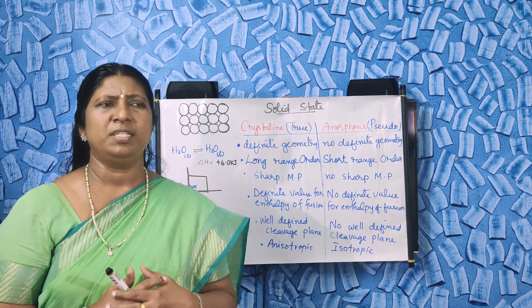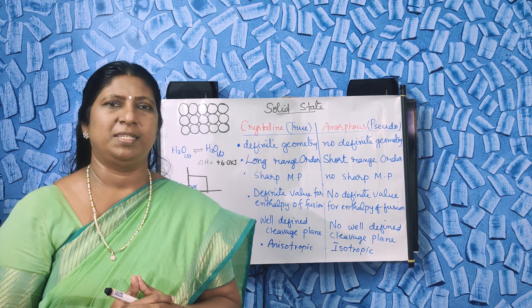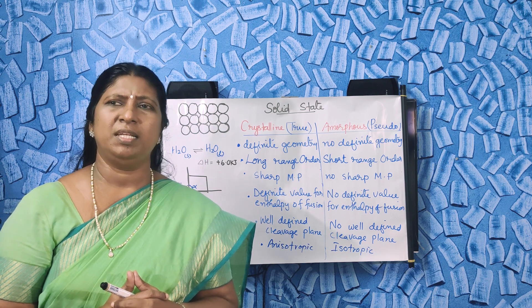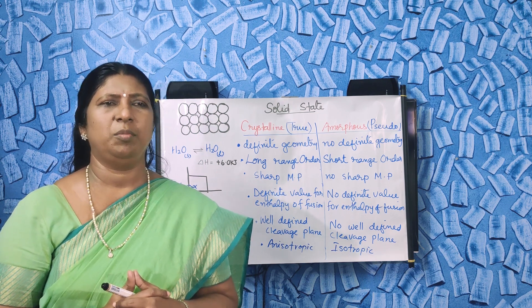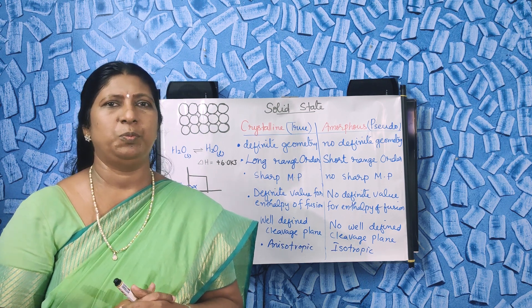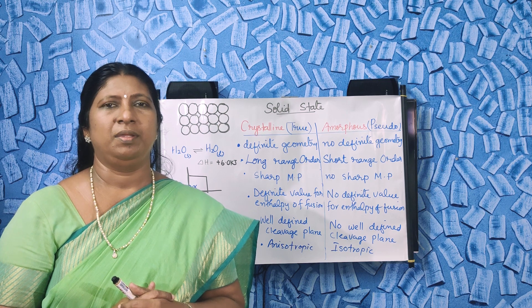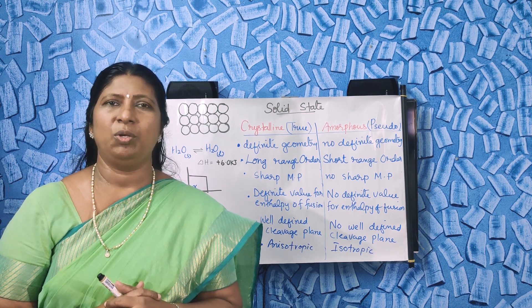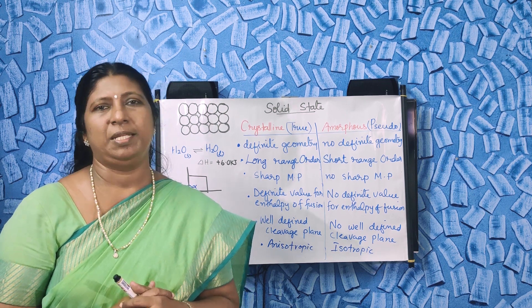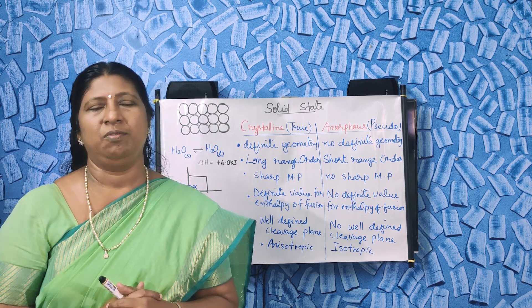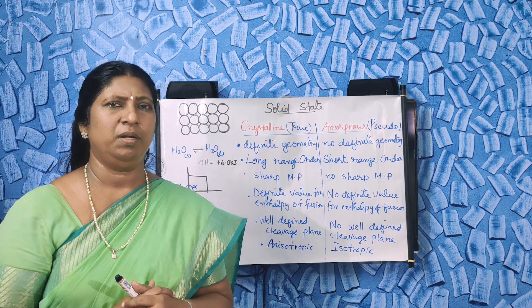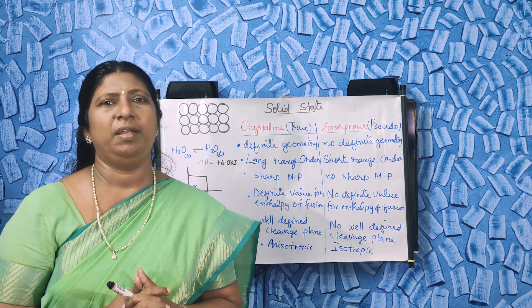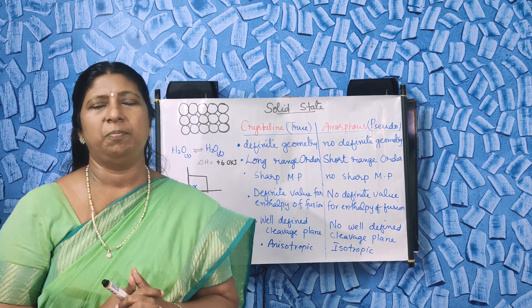What is the shape of plastic? Plastic has no definite shape. What about rubber? Rubber also does not have a well-defined shape.